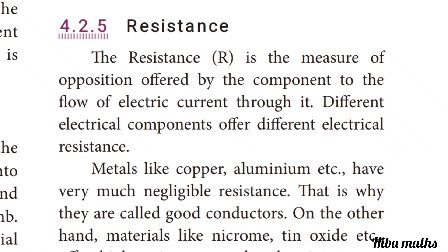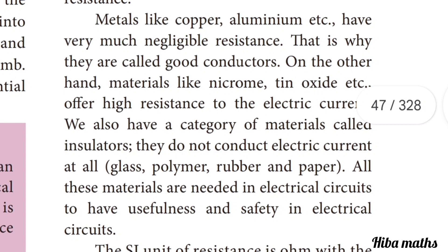Resistance is the measure of opposition offered by a component to the flow of electric current through it. Different electrical components offer different electrical resistance. Metals like aluminum and copper have very negligible resistance, so they are good conductors. On the other hand, metals like nichrome and tin oxide offer high resistance to electric current.